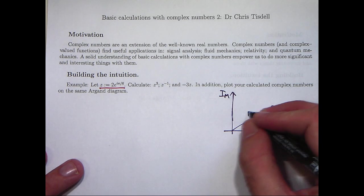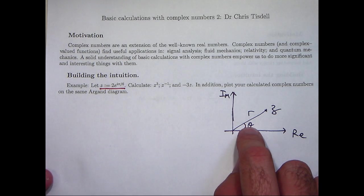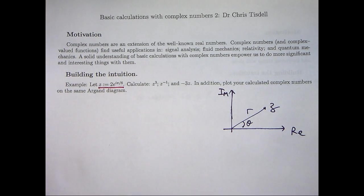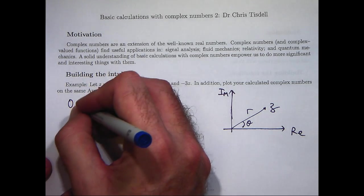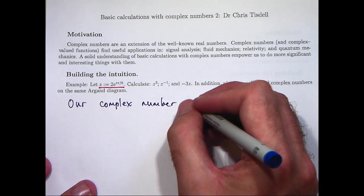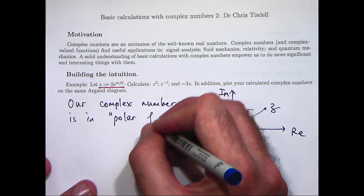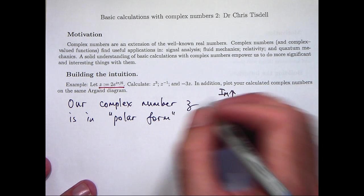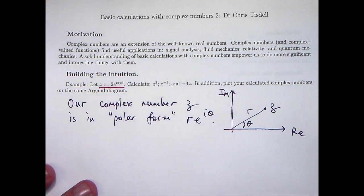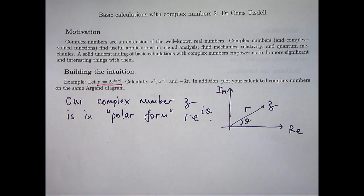Essentially, the angle here and the length here can be used to write any complex number we like. Now, the beautiful thing about the polar form is that it greatly simplifies calculations involving multiplication or powers. And when we calculate these three things, you'll get to see how that simplification works. So let's get into it.